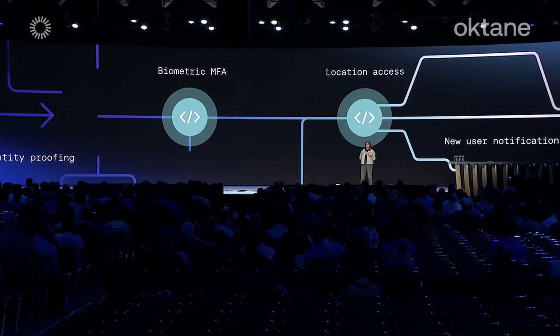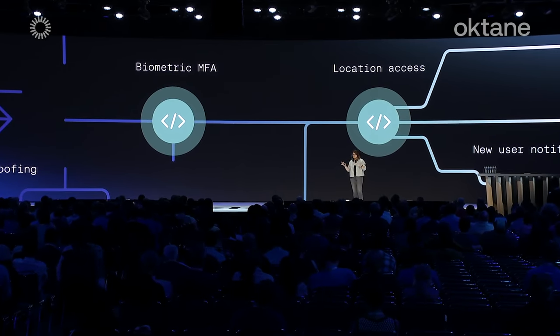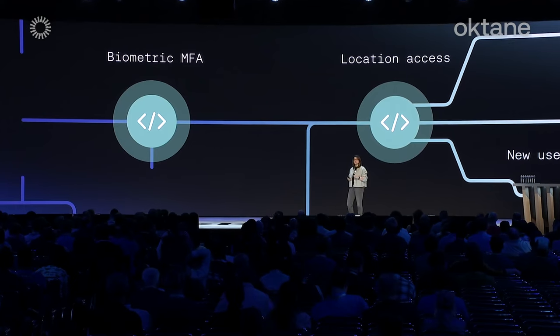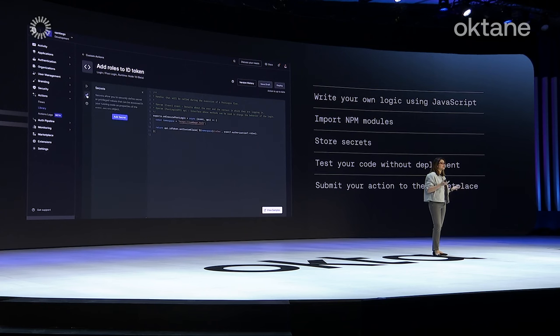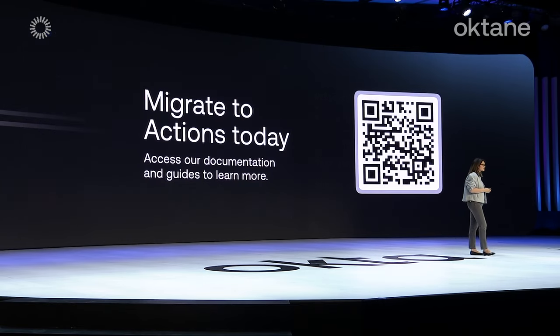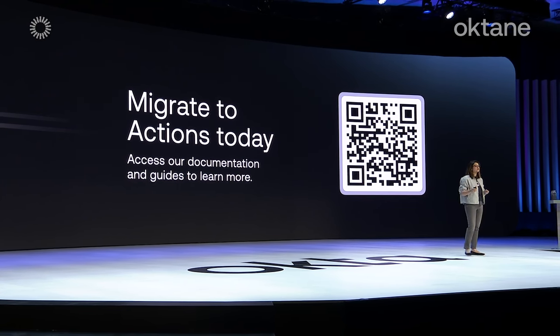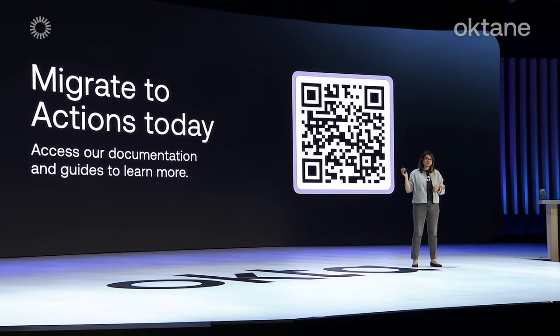For example, if you're planning to add capabilities such as identity proofing, biometric MFA, limiting user access based on location, or sending notifications on new registrations — for most of your needs, we have an action in the marketplace. For the few times when no marketplace action solves your problem, you can write custom actions using our built-in editor. No need to host these yourself — we will host your custom code and scale it with your business. You can even submit it to the marketplace for others to use. By the way, if you've been using rules and hooks to customize your authentication flow, it's time to migrate to actions — they provide a more robust and friendly development environment.